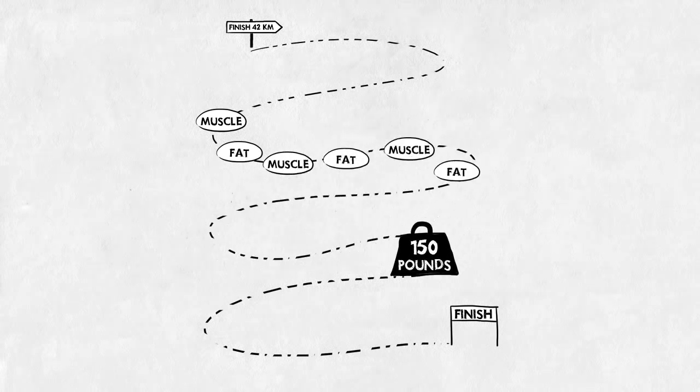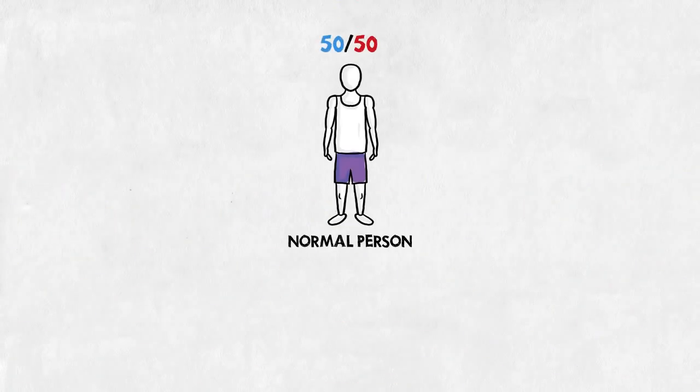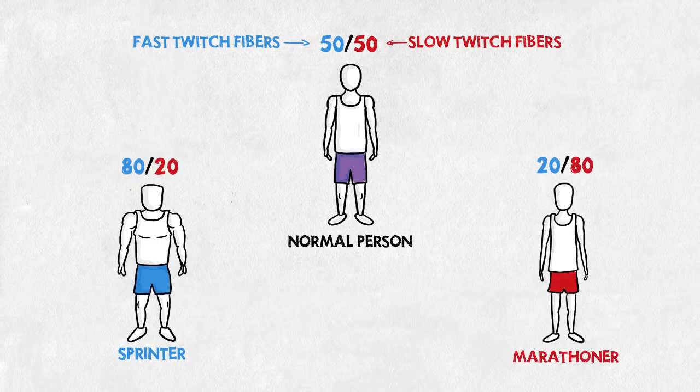That's why he looks so skinny. On top of the difference in training, genetics also play a part. A normal person has about an even amount of fast and slow twitch fibers. But the persons that make it to the top tend to have more of one kind.